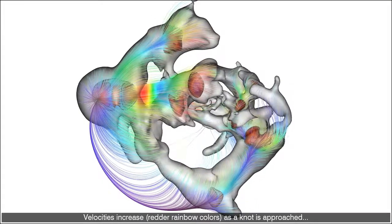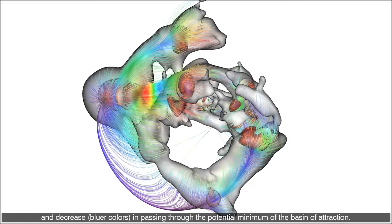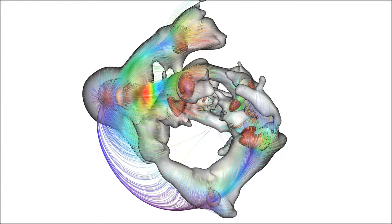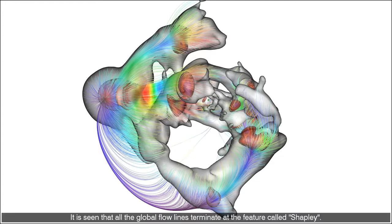Velocities increase, red to rainbow colors, as a knot is approached and decrease, blue colors, in passing through the potential minimum of the basin of attraction. It is seen that all the global flowlines terminate at the feature called Shapley.